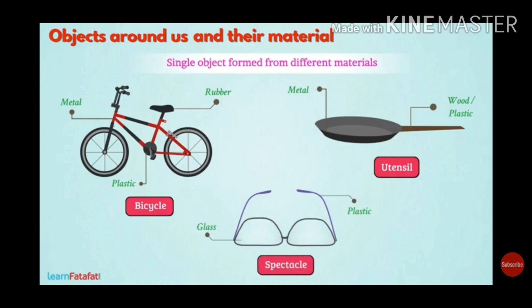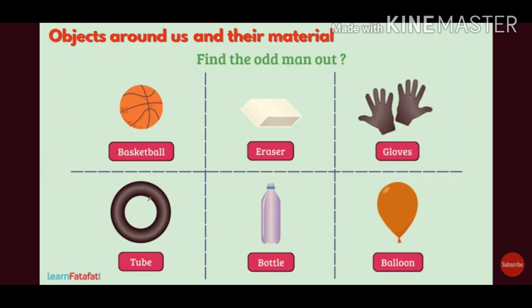For example, if you want to buy a bicycle, you will consider what it is made up of. Similarly, when choosing spectacles or a frying pan, you will think about what these things are made of. Now there is a picture in which you have to find out and write your answer in the comment box.